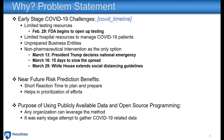During this time, near-future risk prediction has benefits. It gives you short reaction time to plan and prepare, and helps in prioritizing efforts. The purpose of using publicly available data and open source programming is that any organization can leverage this method. Back in early March, around 5th to 10th March, it was an early stage attempt to gather COVID-19 associated risk factor data at the highest level of granularity.